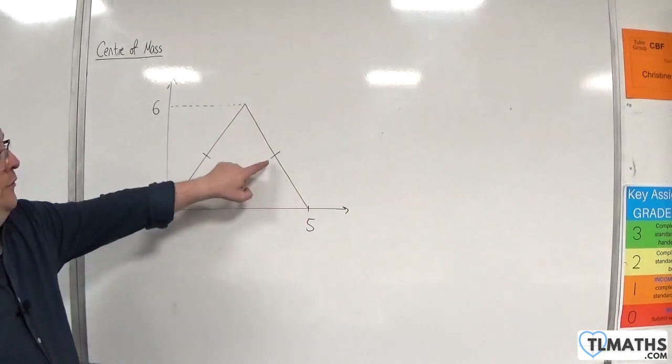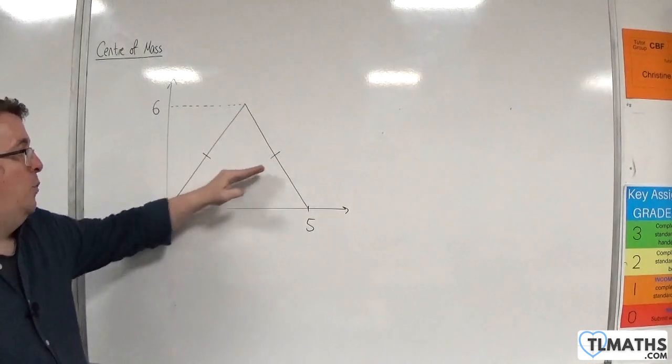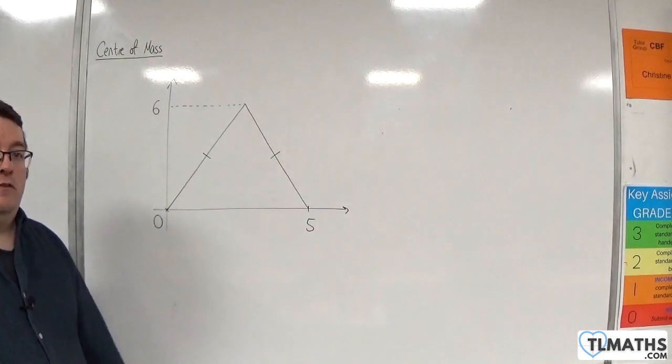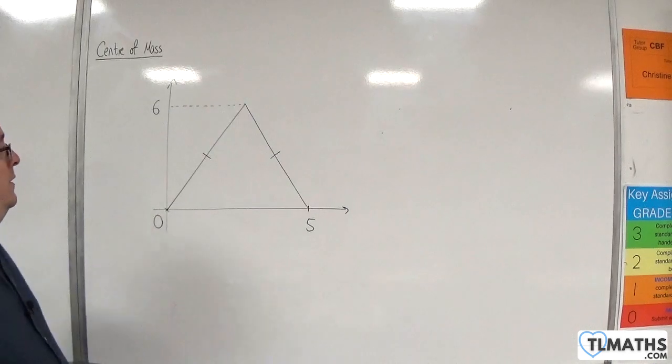And then, once I've got the midpoint, go two-thirds of the way along the median to that point, and then I've got my coordinates of my centre of mass.